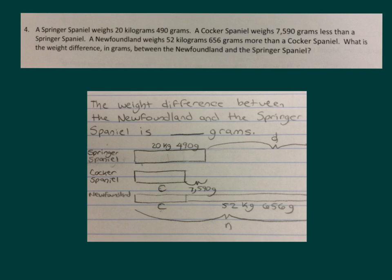Here we have question 4 set up. Where we had a Springer Spaniel weighing 20 kilograms, 490 grams. That's why that Springer Spaniel is written right there. That is a known. A Cocker Spaniel weighs 7,590 grams less than a Springer Spaniel. So the Cocker Spaniel there is 7,590 less than the Springer Spaniel.